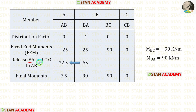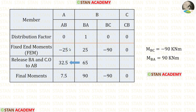We have released BA and we have to give the carryover from BA to AB. When we divide 65 by 2, we get 32.5. Now let us calculate the adjusted fixed end moments. When we add the two values, we get 7.5 for MAB, and we already know the two values for BA add up to 90.